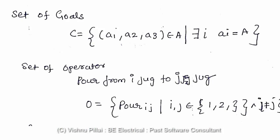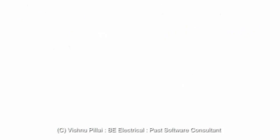A1 to a3 are the different goal states that you want to achieve. The set of operators defines what function you want to perform, such as pour from jug i to jug j.